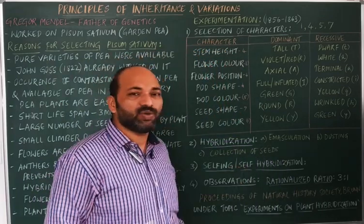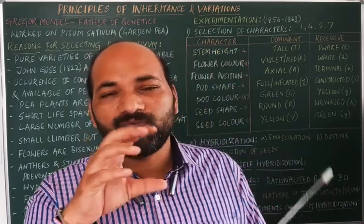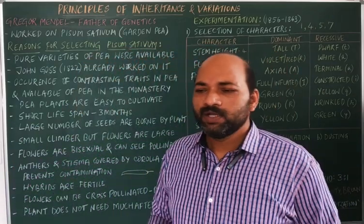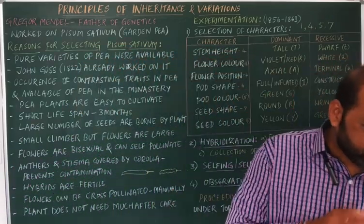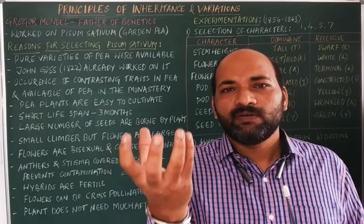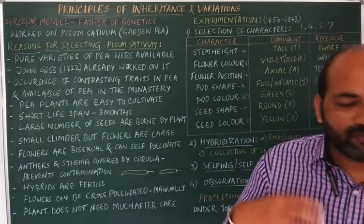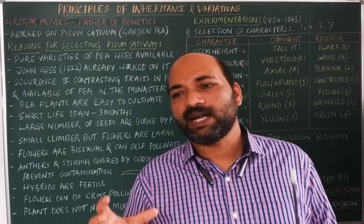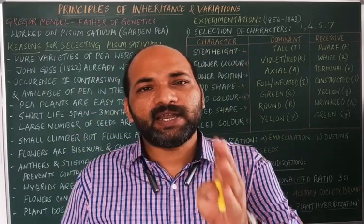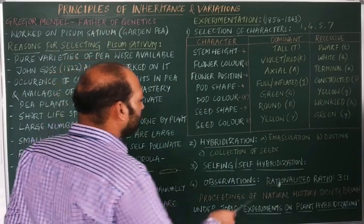Emasculation means the process of removal of anthers from a bisexual flower using forceps. That is what Mendel performed during emasculation. When the stamens were removed, that particular flower acted as a female flower, and whenever the pistils were removed, it acted as a male flower. So 50% of the flowers selected were made male and 50% were made female flowers.